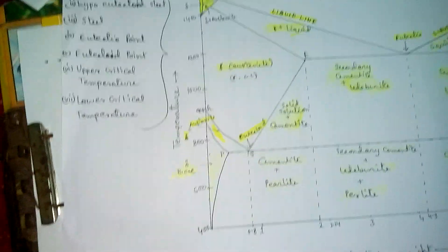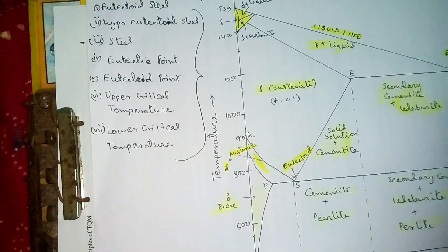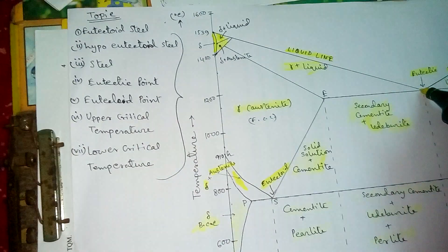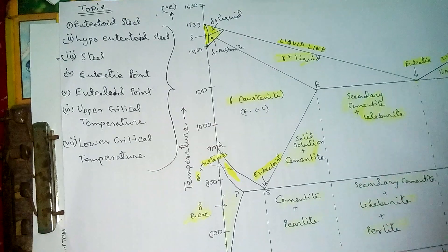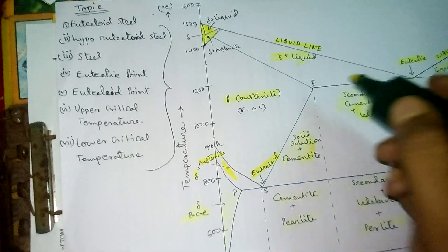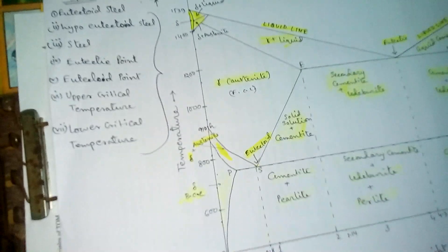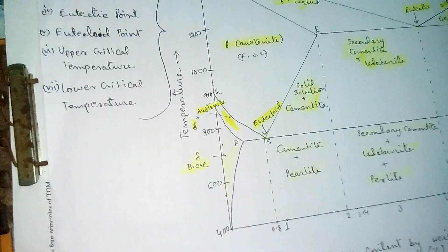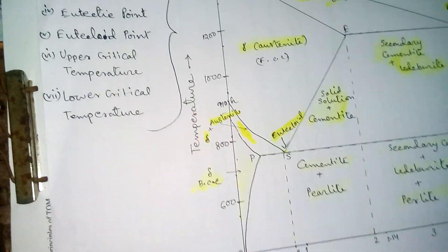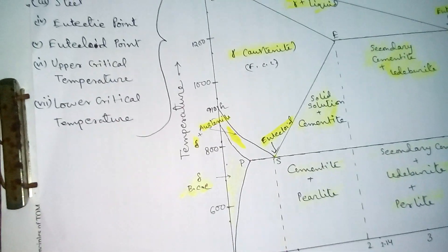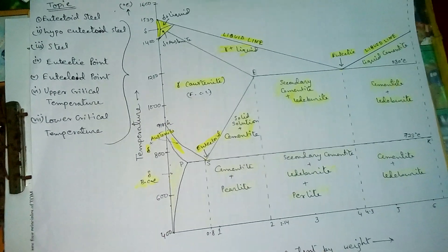To summarize the key points: the eutectic point is at 1130°C and 4.3% carbon. The eutectoid point is at 723°C and 0.8% carbon. Next, what is hypo eutectoid steel?